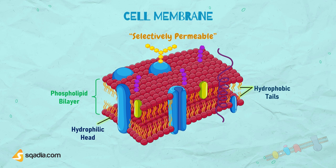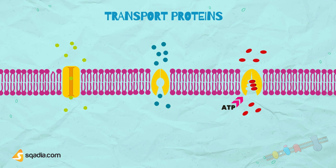So what will happen if a material needed within the cell is prevented from passing through the cell membrane? How will it get through? The passage of these molecules relies on specific transmembrane proteins. These membrane transport proteins are highly specific and selective for ions and other larger molecules, transporting them across membranes.